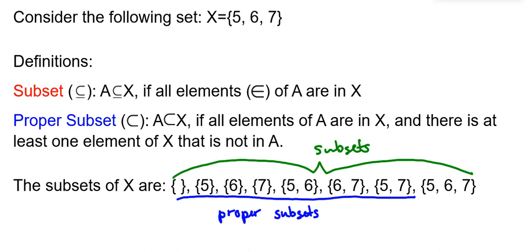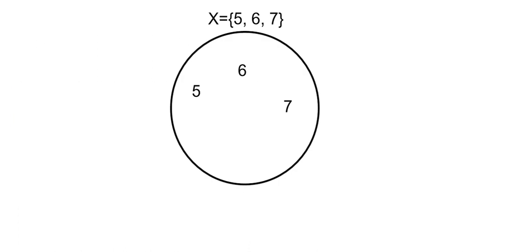So let's take a look at a graphical representation of this. So here I have set X drawn out for you. And we can see that if we define sets A, B, and C as being 5, 6, and 7, then they are all subsets of X. They are actually all proper subsets.